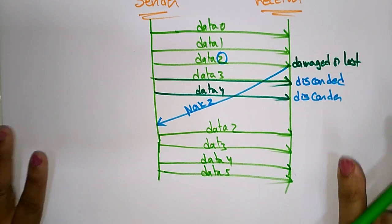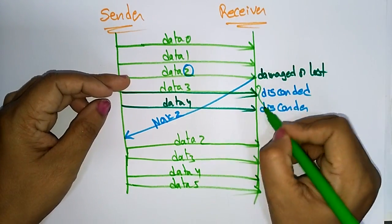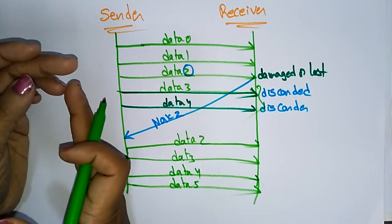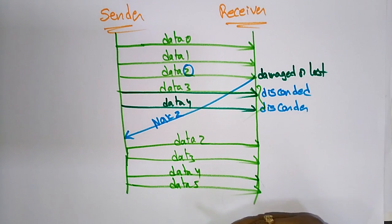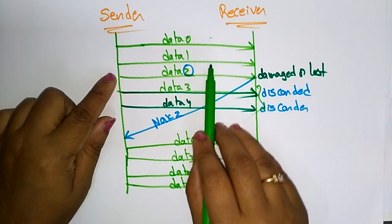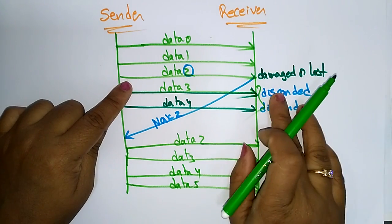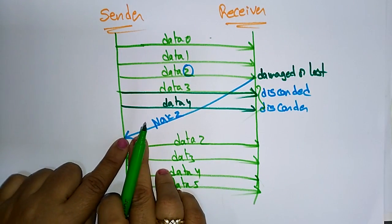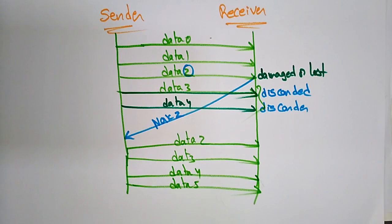This is Go-Back-N ARQ. After a damaged frame, all frames sent after the damage must be sent again — go back and send all the data after the damaged one. Data 0 is sent, Data 1 is sent, Data 2 is damaged, the receiver sends a negative acknowledgement, and then the sender resends Data 2, Data 3, Data 4, and Data 5.